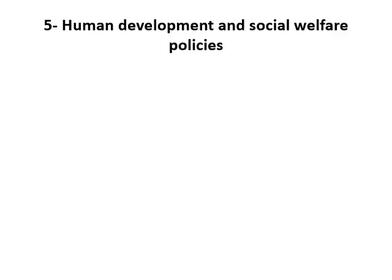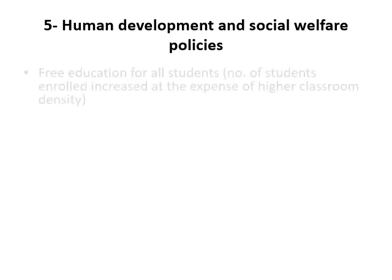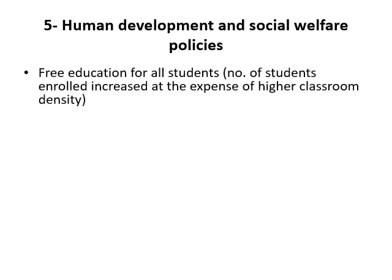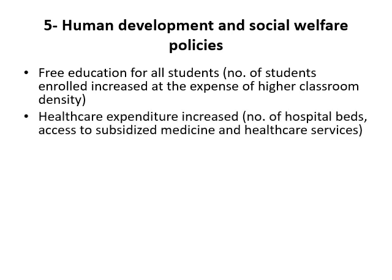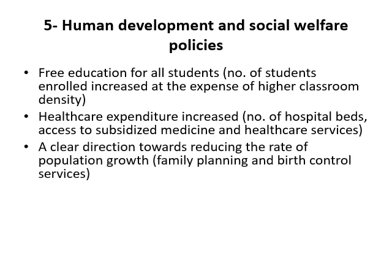The fifth point is human development and social welfare policy. During that period, the number of students enrolled increased, though at the expense of higher classroom density, and free education was available for all students. Health care expenditure increased, including hospital beds, access to subsidized medicines and healthcare services. A clear direction emerged toward reducing the rate of population growth through family planning and birth control services.